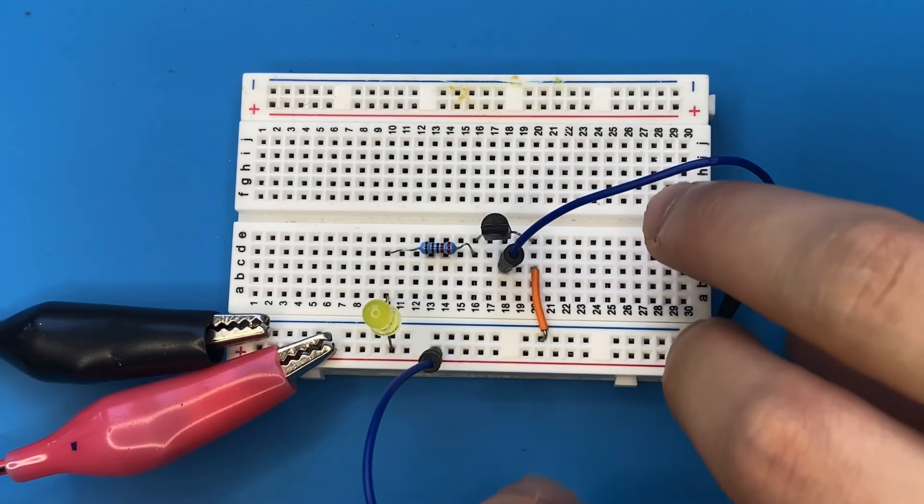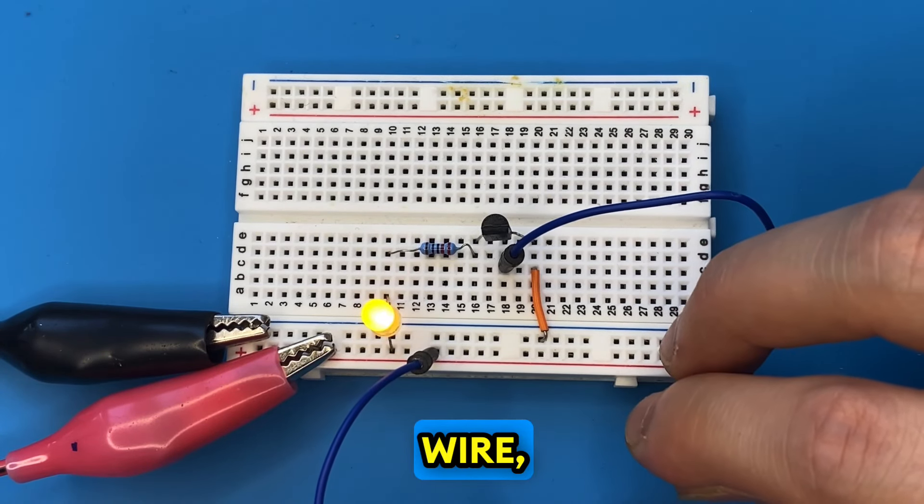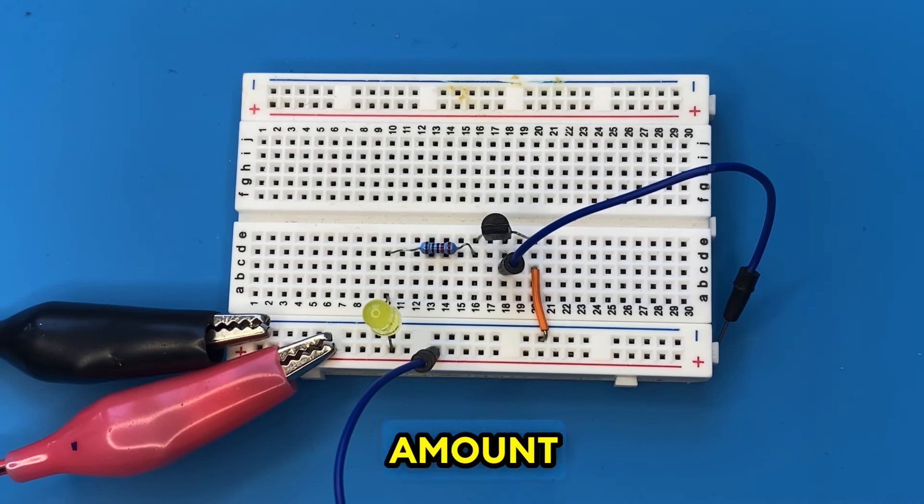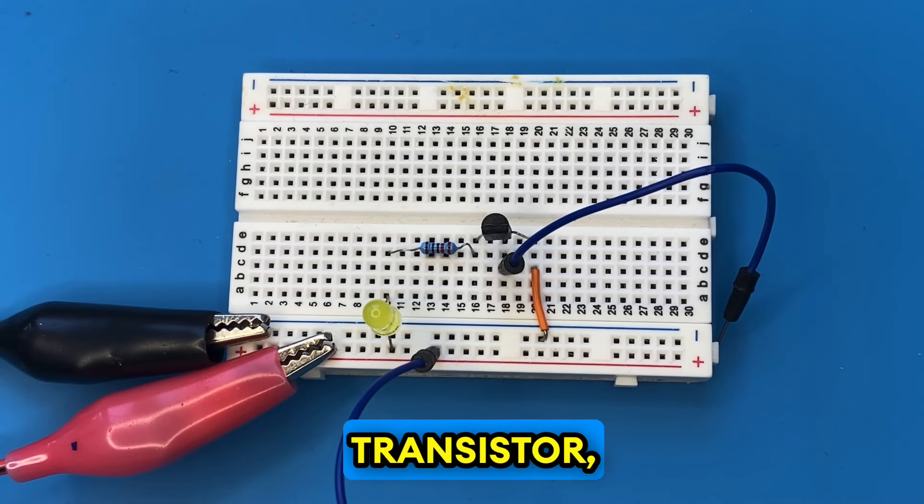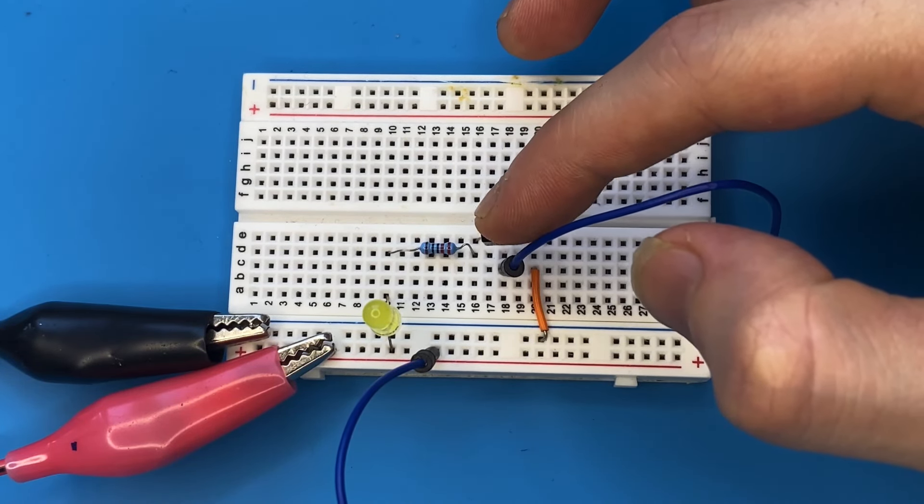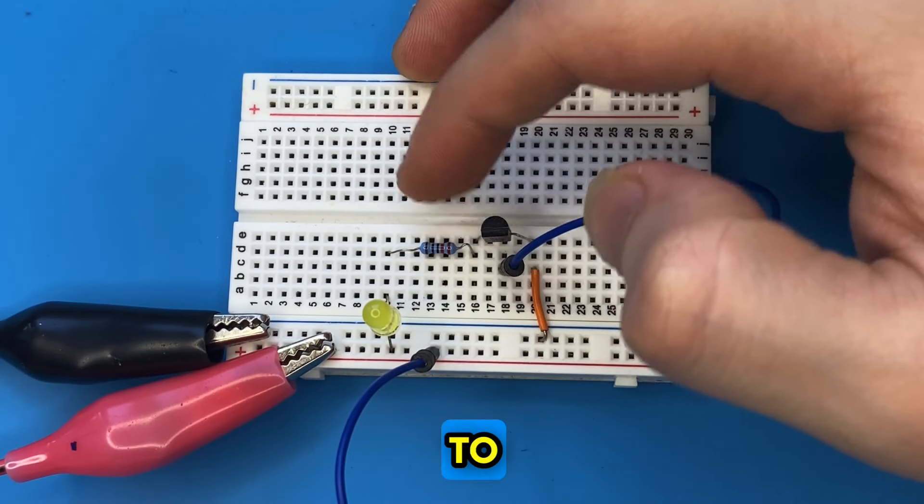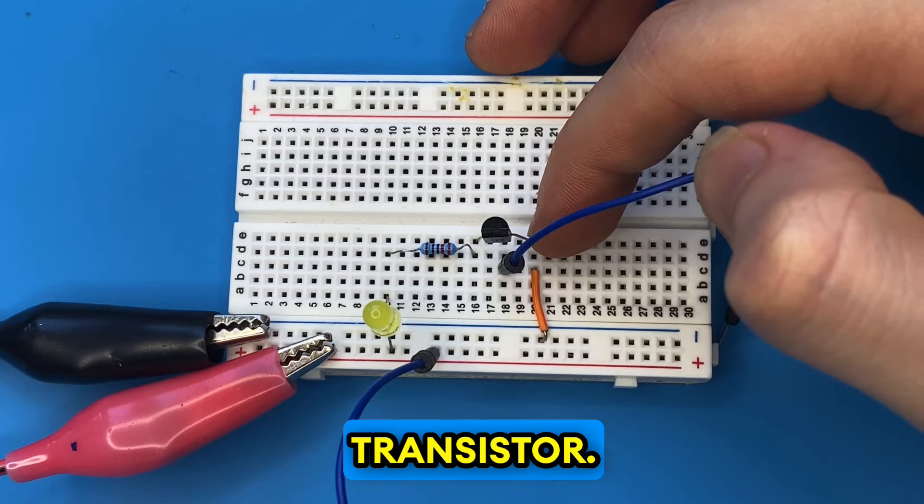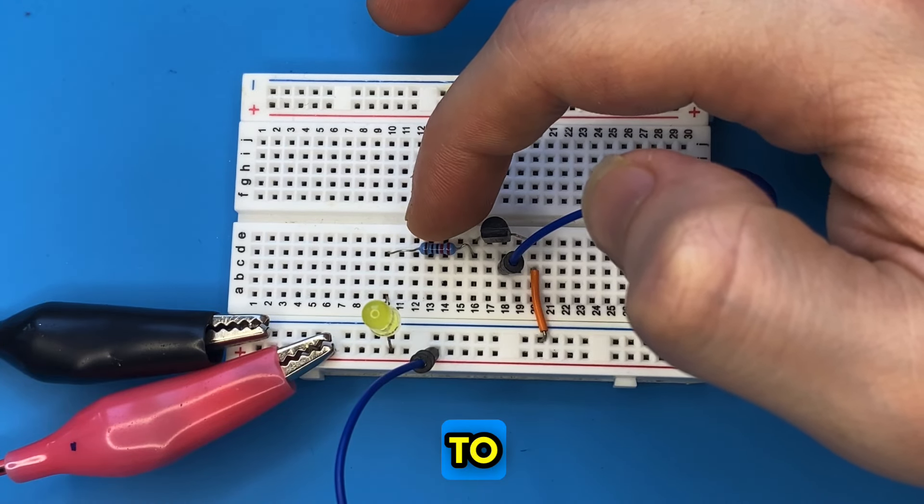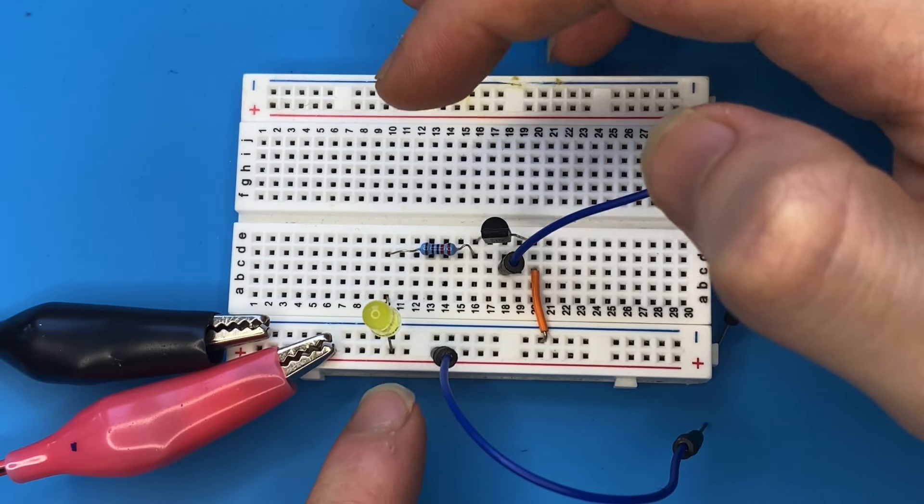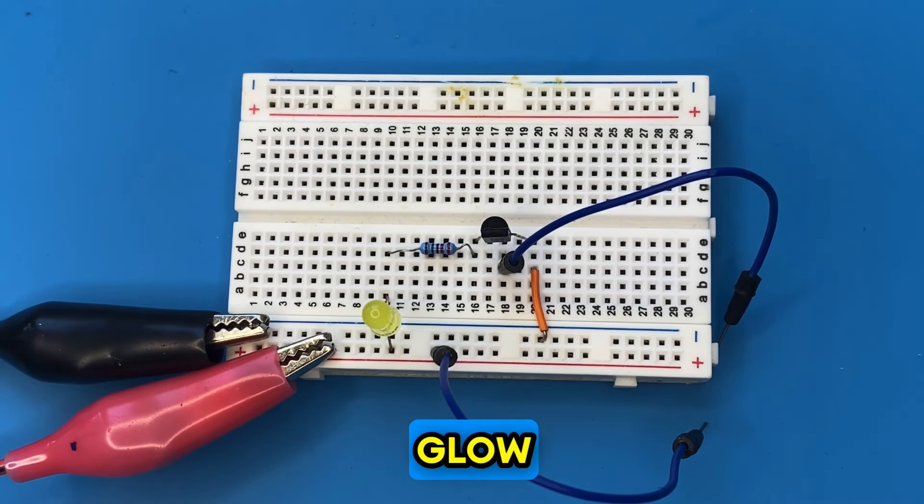Whenever I touch the free ends of the jumper wire, I introduce my body's capacitance to the circuit. A tiny amount of current flows through my body to the base of the transistor, which then turns the transistor on. This current flows from the collector to the emitter, is limited through the 330 ohm resistor, and finally reaches the yellow LED, making it glow.